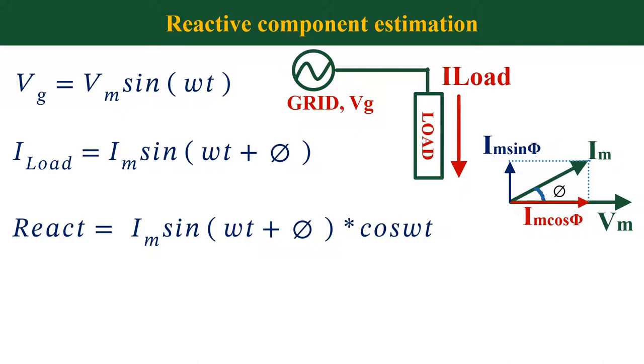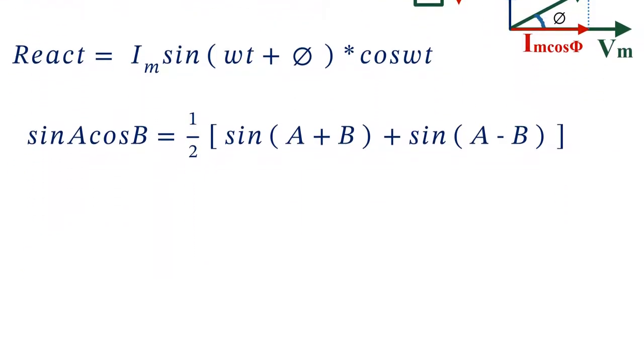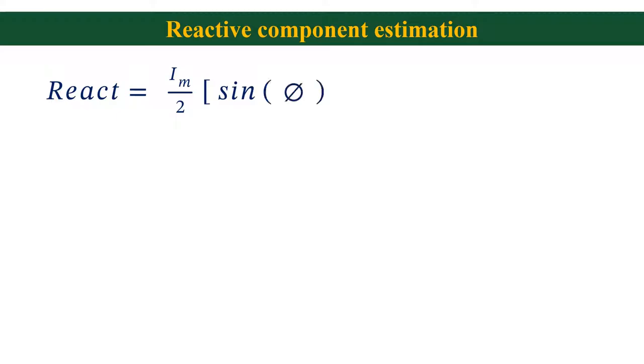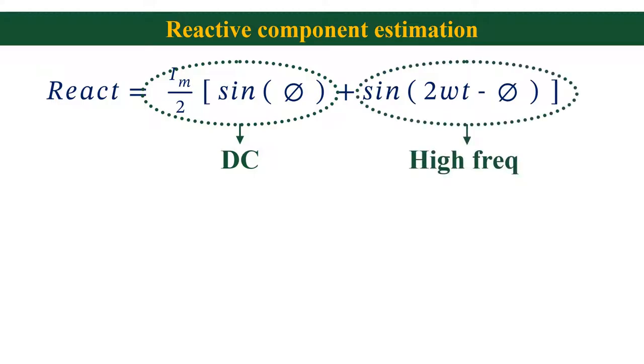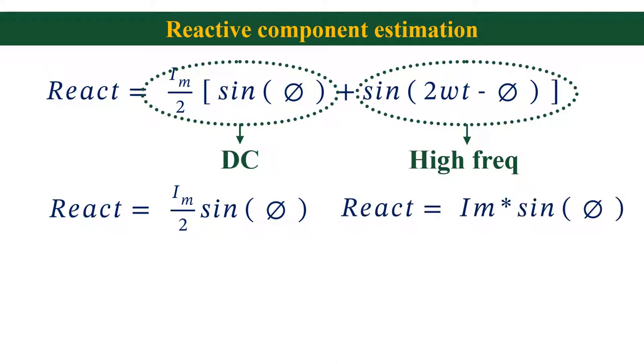Now solve the above equation using the trigonometric identity that is sin a cos b is equal to half sin a plus b plus sin a minus b. So we will get reactive component as equal to Im by 2 into sin phi plus sin 2 omega t minus phi. The first term is a dc term and the second term is a high frequency term. Now use a low pass filter to completely filter out the high frequency term. Then we get reactive component as Im by 2 sin phi. Multiply this term with 2, then we get our reactive component as Im sin phi. This is how we estimate the reactive component.